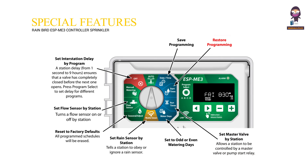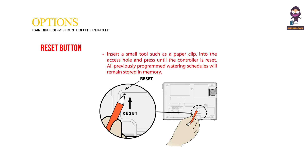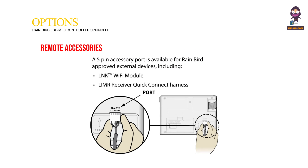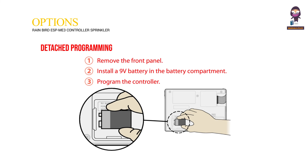Restore programming. Save programming. Options. Reset button: insert a small tool such as a paper clip into the access hole and press until the controller is reset — all previously programmed watering schedules will remain stored in memory. Remote accessories: a 5-pin accessory port is available for Rain Bird approved external devices including the LNK Wi-Fi module, limber receiver, and quick connect harness. Detached programming: remove the front panel, install a 9-volt battery in the battery compartment, then program the controller.